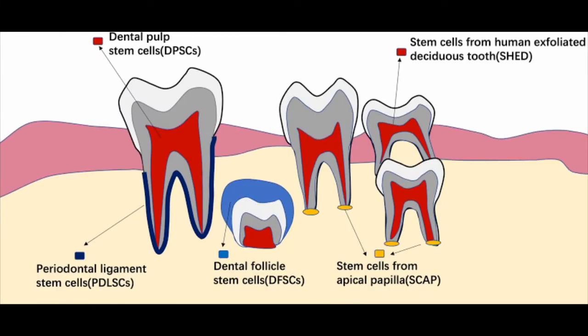The post-eruptive phase also accommodates the completion of root formation. When the tooth erupts, only two-thirds of its root is formed; one-third is formed after eruption. When root formation completes, the tooth length increases, and therefore a small amount of eruptive movement is done. Eruptive movement also takes place when there is continued deposition of cementum around the root apex.